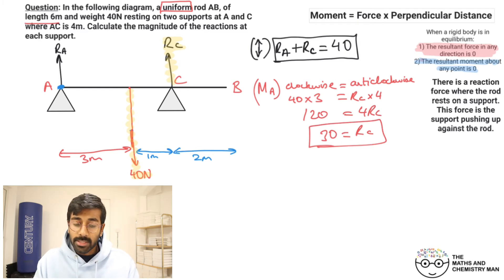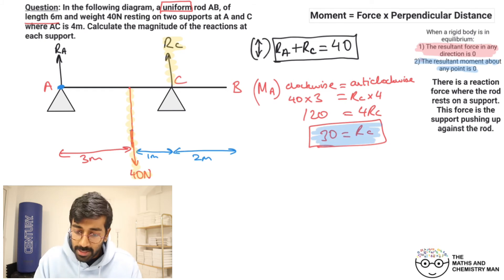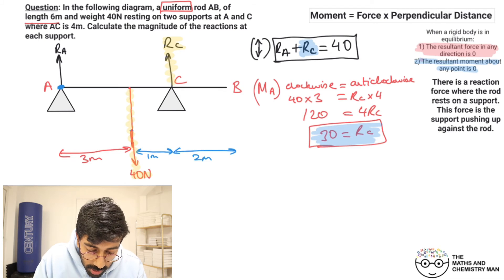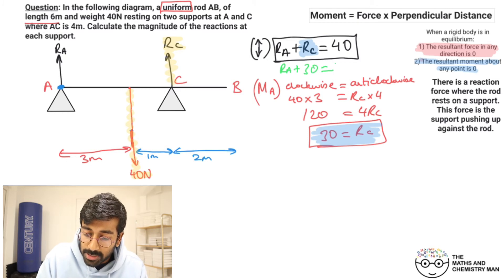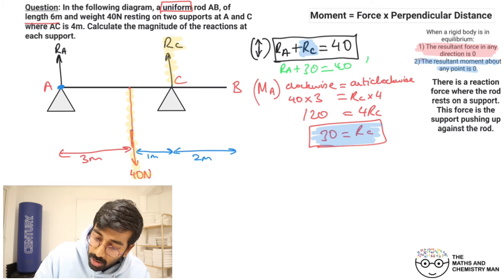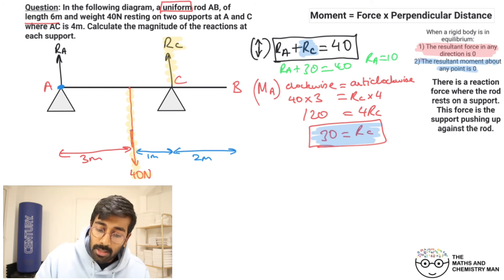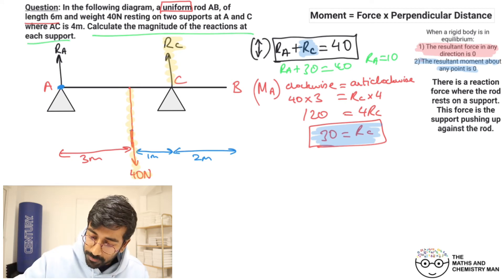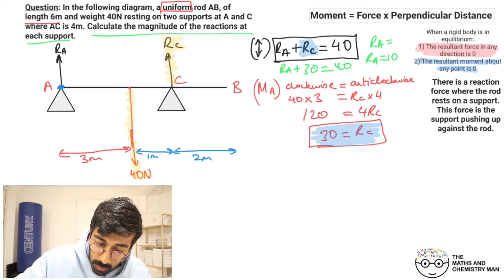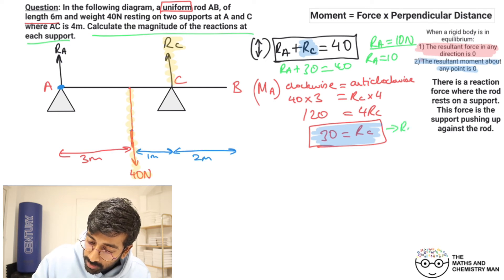Now that we have Rc equal to 30, we can substitute it back into our first equation. Ra plus 30 equals 40, which means Ra equals 10. So the reaction force at A is 10 newtons and at C is 30 newtons.